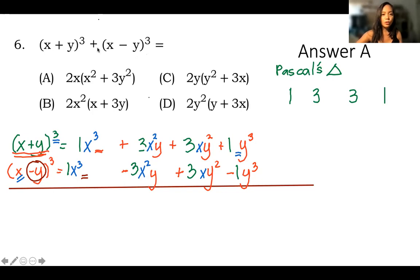And if you add them according to the problem, you add them, the result will be: this will be 2x cube, this will be 0, this will be 6xy squared, and this will be 0. A positive, negative. A positive, negative will be 0. So we are left with this.